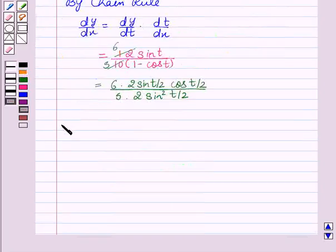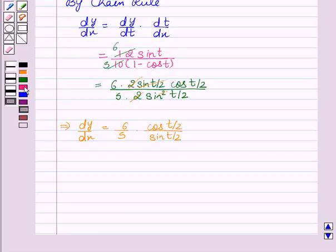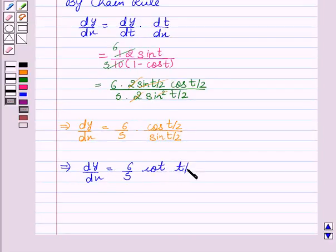This implies dy upon dx equal to 6 upon 5 into 2, cancel out sin. We are left with cos t by 2 upon sin t by 2. This implies dy upon dx equal to 6 upon 5 cot t by 2.